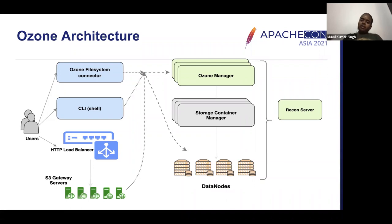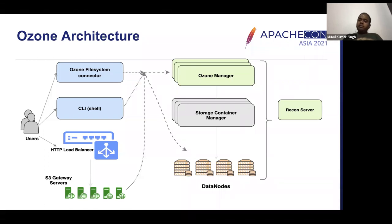In HDFS, both the namespace and block space were monolithic and inside one single NameNode. We have tried to break that monolithic architecture and make these two separate processes so that each one can be scaled independently of the other. The data nodes, even though Ozone data nodes are different from HDFS data nodes, are in theory very similar to how HDFS data nodes behave, though we write the data differently.